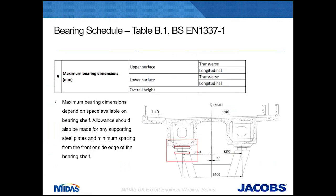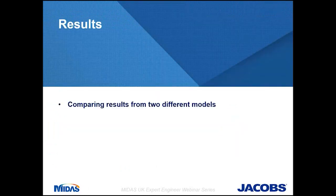The next parameter in the bearing schedule is maximum bearing dimensions — the maximum dimension the bearing shelf can accommodate. You should consider allowance for the steel plate, a certain distance from the edge of the bearing shelf, and potentially a concrete upstand, providing dimensions in both longitudinal and transverse directions. The overall height of the bearing should also be provided. There may be cases where the spacing between the soffit of the deck and the bearing shelf is limited. That concludes the bearing schedule part of the webinar.